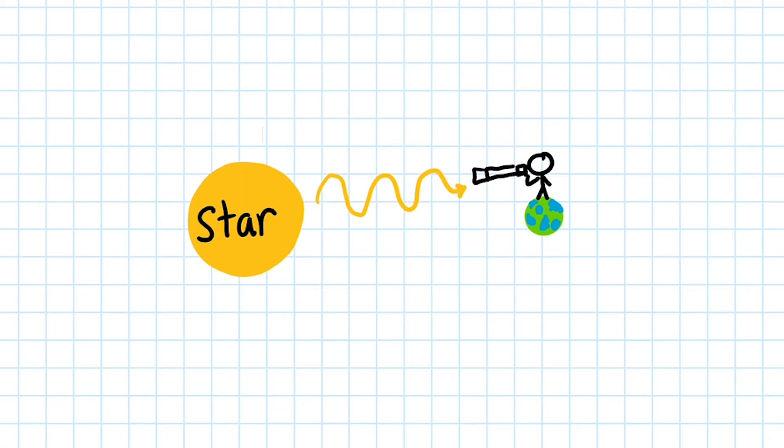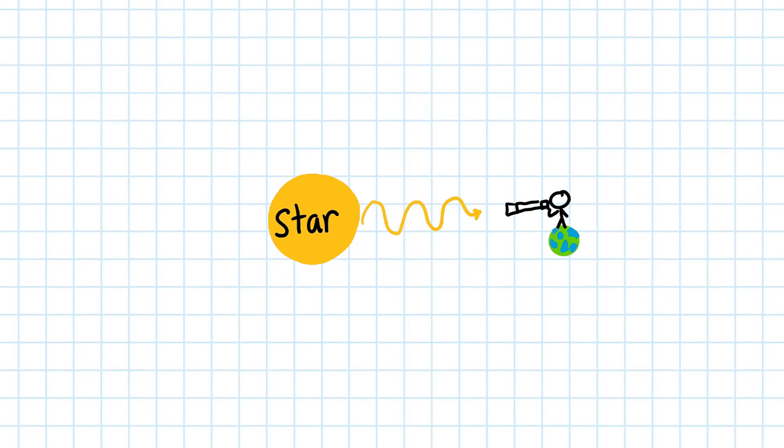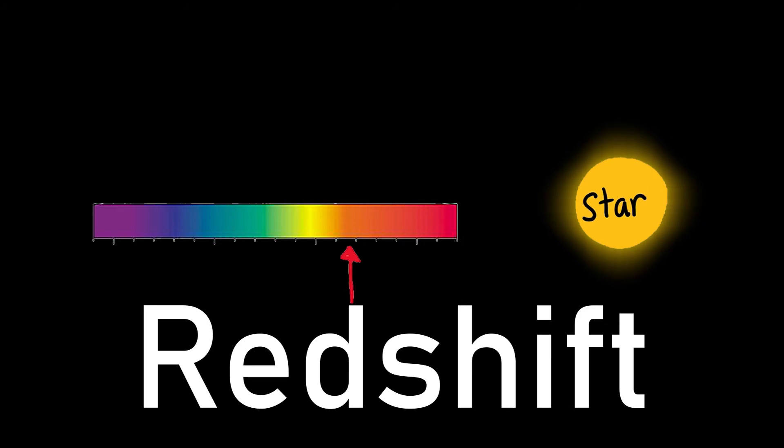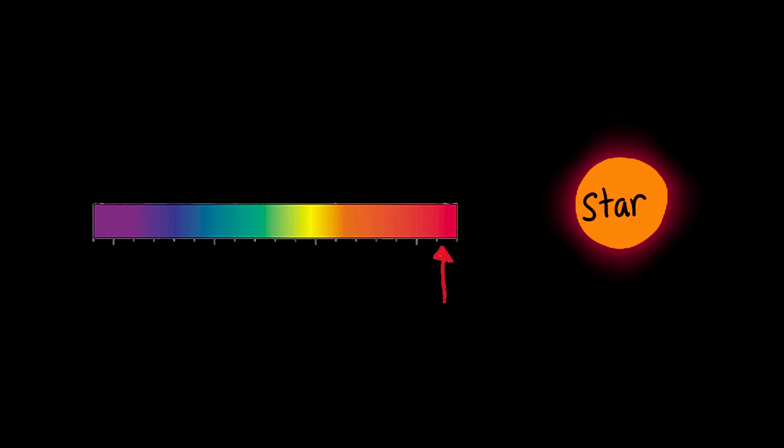But maybe our second scenario will be more exciting. In this situation, we are still observing from Earth the star that emits yellow light. But this time, the star is moving away from Earth. Since it's emitting the light wave while traveling away from us, the wave will be stretched, meaning it now has a larger wavelength. According to the EM spectrum, shifting to a larger wavelength shifts the wave towards the red end of the spectrum. If we are observing from Earth, the star will appear more red compared to the light that it actually emits.